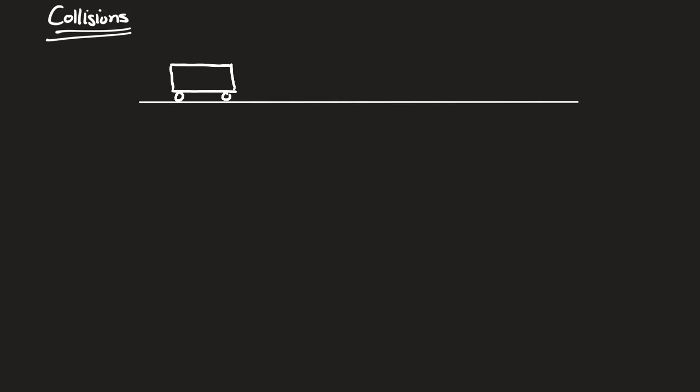I'm going to provide you with names for different kinds of collisions, but understand that they may not name these on tests. If they do say the name in the problem, you'll have to know what that means for the result. Here's the first one: a car with a mass of 5 kilograms traveling at 10 meters per second collides with a 10 kilogram car that's at rest.